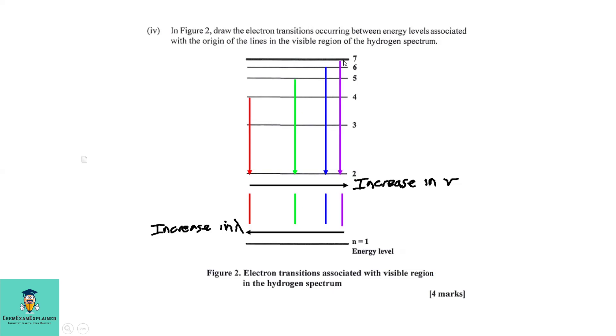So, what they do is they fall back to achieve stability to a lower level. As they do so, they emit light of a particular wavelength and frequency. So, you'll see here that these are falling back from the highest ones, 7 to n=2, then 6 to n=2, then 5 to n=2, and then 4 to n=2.